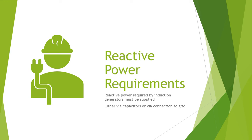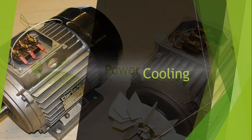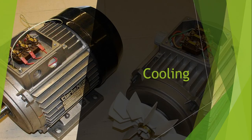The induction generator may provide the necessary power directly to the main utility grid, but it needs reactive power from its supply, which is usually provided by the utility grid. When it is rotated faster than its normal operating or no-load speed, the induction generator will be capable of producing electrical power.